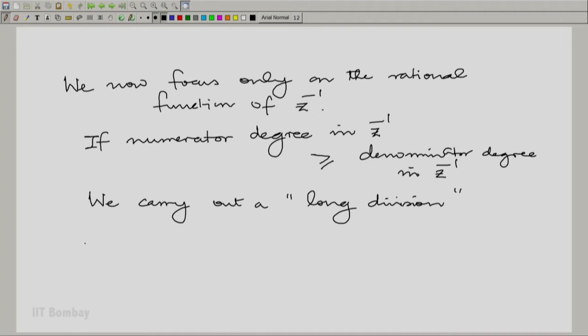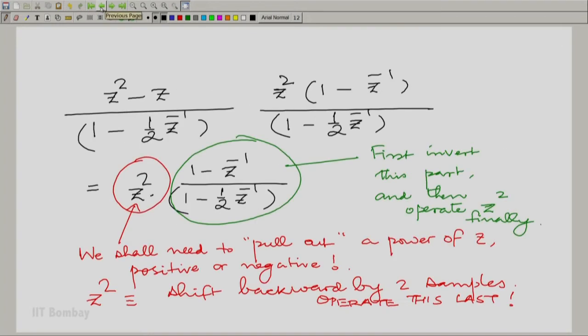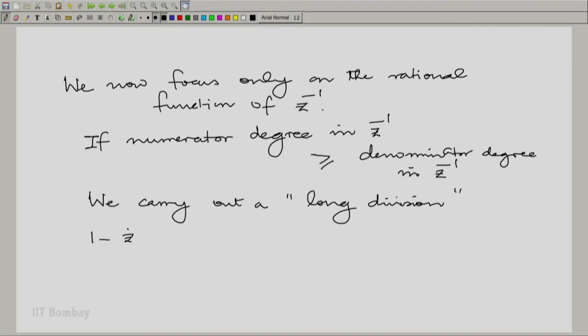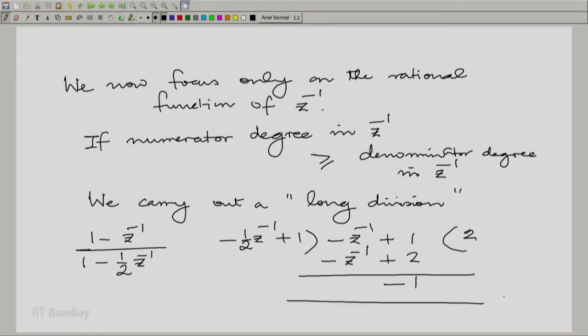For example, let us take the factor that we had in the previous example. We had this factor 1 minus Z inverse by 1 minus half Z inverse, and let us do the long division there. We would need to multiply by 2, and thereby we get 1 minus Z inverse by 1 minus half Z inverse is essentially 2 plus minus 1 by 1 minus half Z inverse.